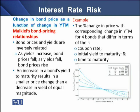Malkiel says that bond prices and yields are inversely related: as yields increase, bond prices fall, and as yields fall, bond prices rise. Furthermore, any increase in a bond's yield to maturity results in a smaller price change than a decrease in yield of equal magnitude.